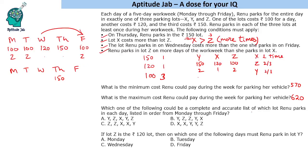The next question asks: which of the following could be a complete and accurate list of which lot Renu parks in each day, listed in order from Monday through Friday? We check the conditions: Z must occur more times than X, Wednesday must cost more than Friday, and each lot used at least once. Option B has Z occurring fewer times than or equal to X, so we eliminate it. Option C has X two times and Z two times — not possible since Z must be strictly more. The valid option has X once and Z twice, Wednesday costlier than Friday, and Y = 150, which is possible.